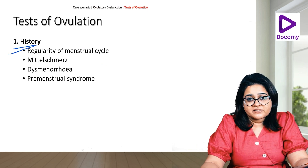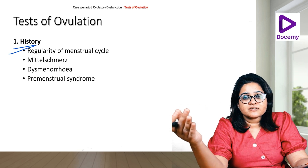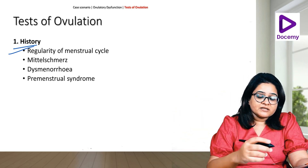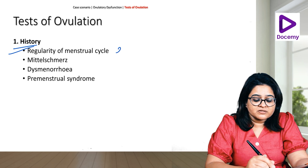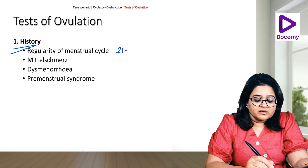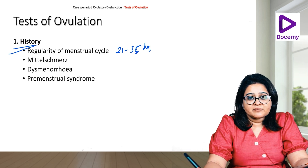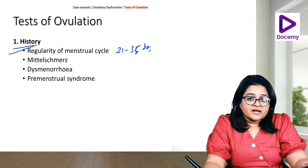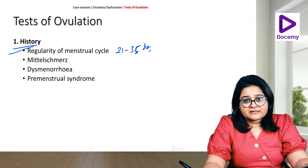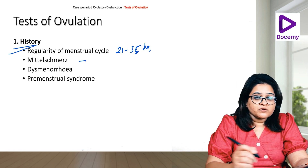First things first — we always take a history. What tells us she is having regular cycles and ovulating is if she has a regular cycle. A 21 to 35 day regular cycle gives us indirect evidence that yes, she most likely is ovulating. Also, if she has mittelschmerz —